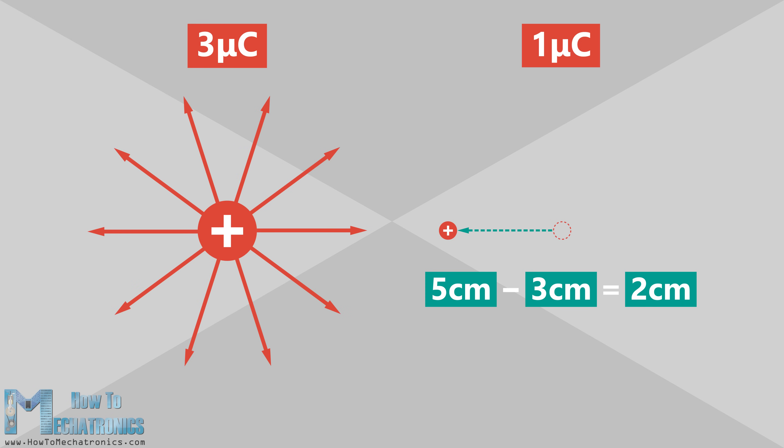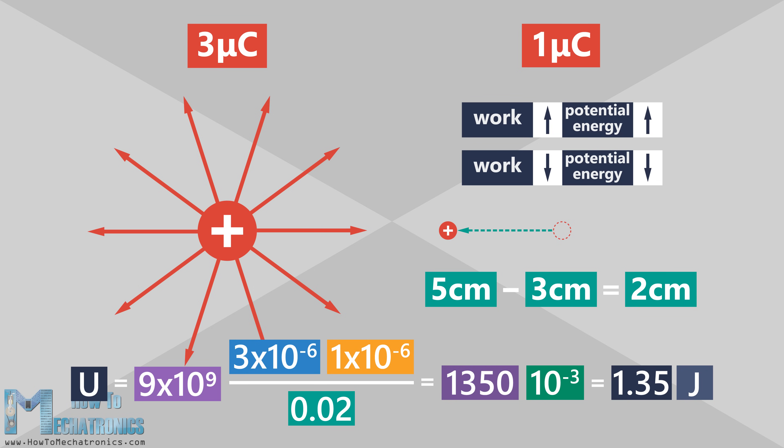Let's go back to the example now and calculate the electric potential energy. The electric potential energy at three centimeters distance from the point charge is 1.35 Joules. From the equation for electric potential energy we can notice that the greater the charge on the test charge the greater the repulsive force and more work would have to be done to move it closer to the positive point charge.